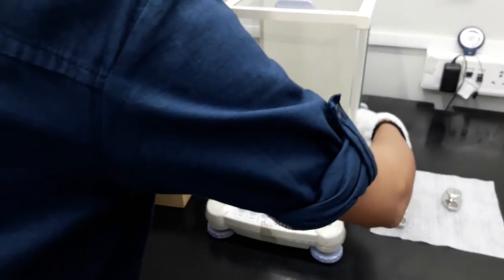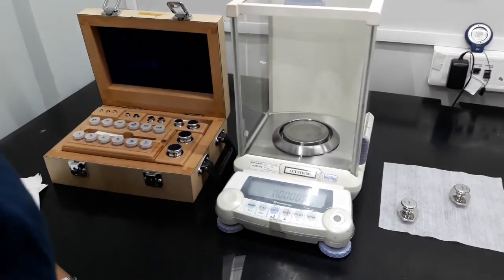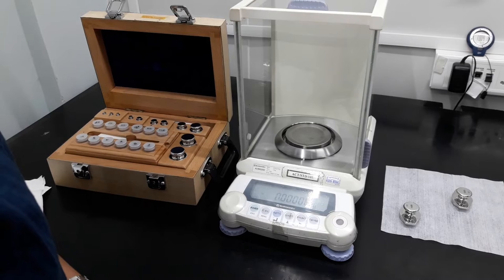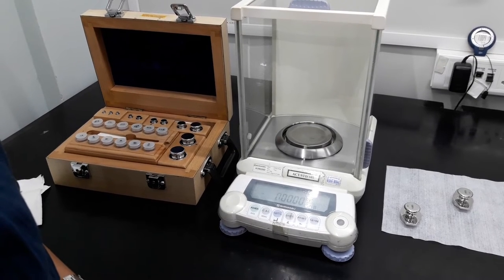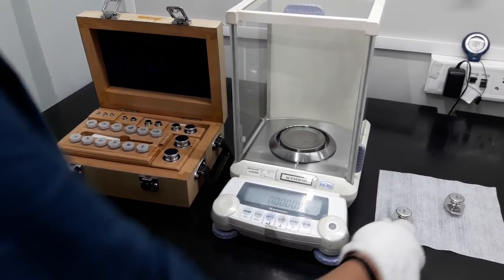Now take the UUC of the same capacity and keep it on the pan of the weighing balance. Observe the reading and note down the reading on CDS.